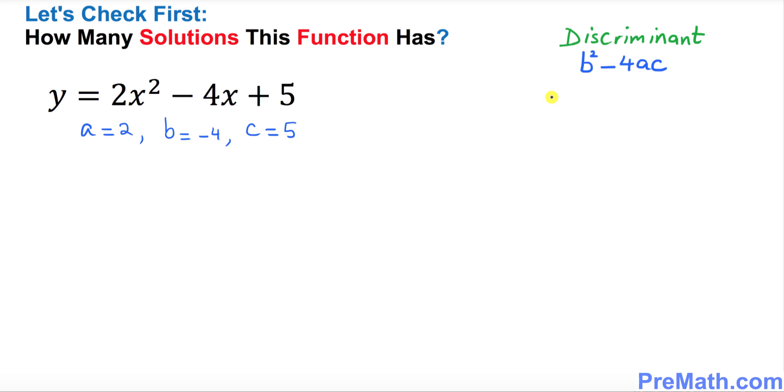Let's plug it in and see what happens: negative 4 squared minus 4 times a is 2, times c is 5. This is going to be 16 minus 40, which is going to give you negative 24.